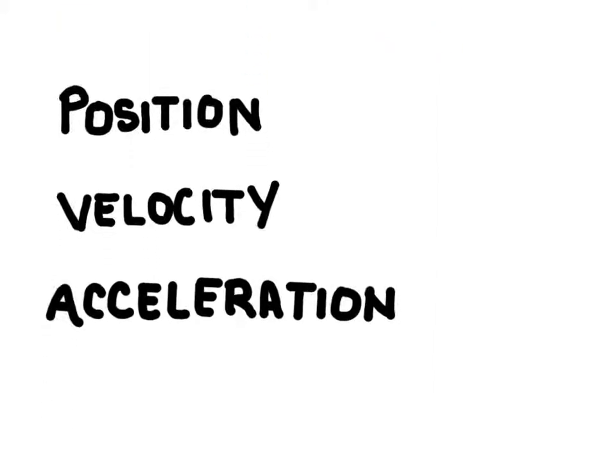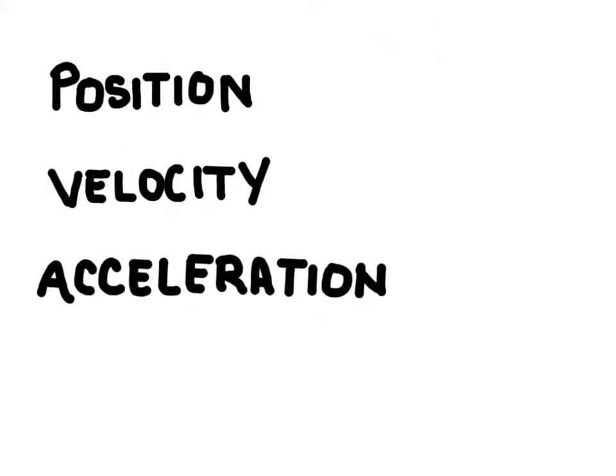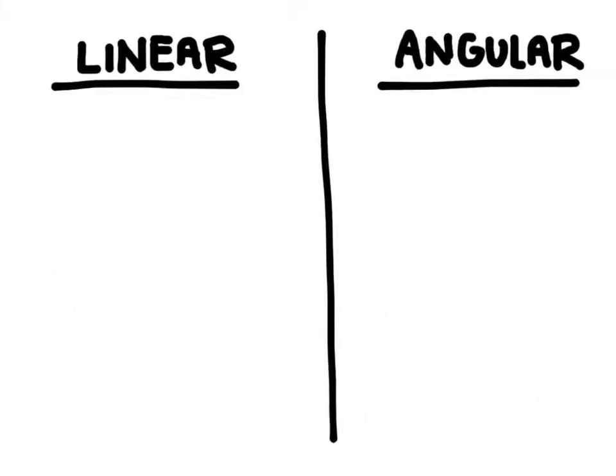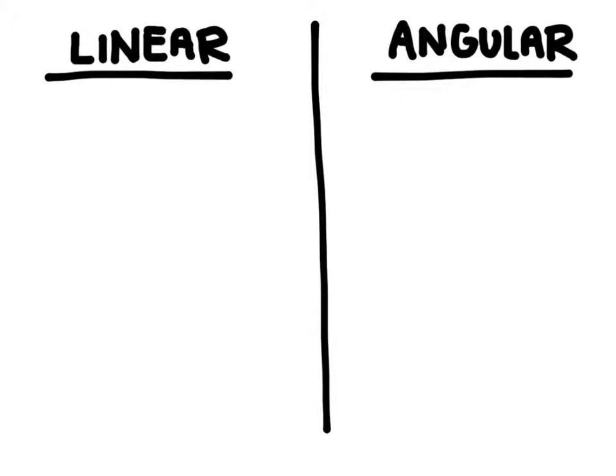Now we can describe circular motion in terms of position, velocity, or acceleration just like we can with linear motion. So let's see how linear motion is different from circular motion. First of all we usually call circular motion angular motion. So we're going to have angular position, angular velocity, and angular acceleration.